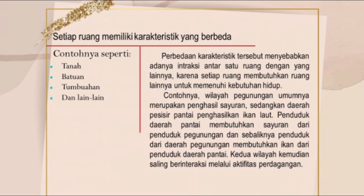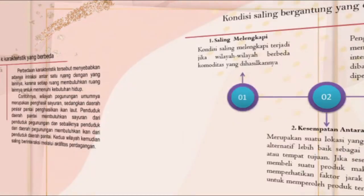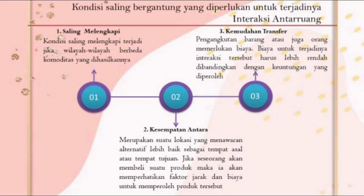Karakteristik yang kita bicarakan di sini adalah sumber daya alamnya. Masyarakat di daerah pantai dan daerah pegunungan tentu memiliki karakteristik yang berbeda. Masyarakat pantai memiliki sumber daya ikan laut dan masyarakat wilayah pegunungan memiliki sumber daya sayur-sayuran. Sekarang masuk ke materi tentang bentuk kondisi saling bergantung untuk terjadinya interaksi antar ruang, yang memiliki tiga bagian.